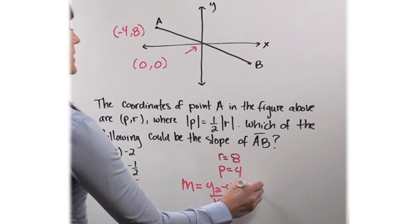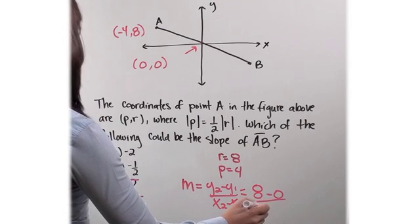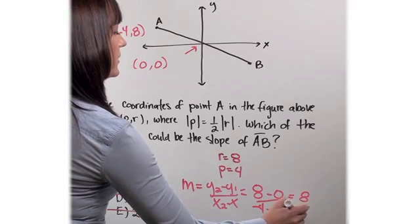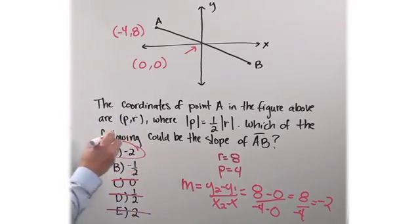My y value, it would be 8 minus 0 over negative 4 minus 0. I get 8 over negative 4, which gives me negative 2, and my answer is A.